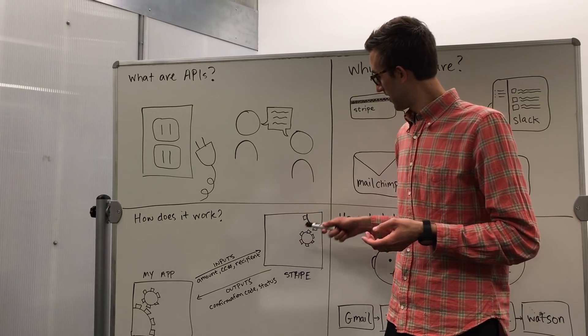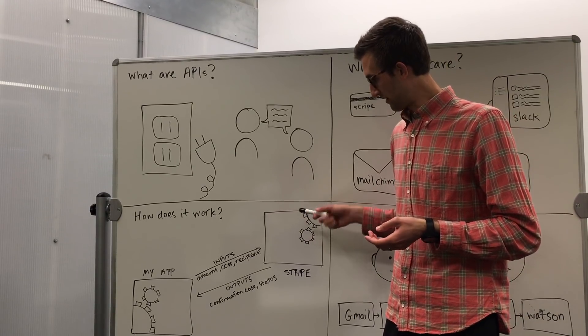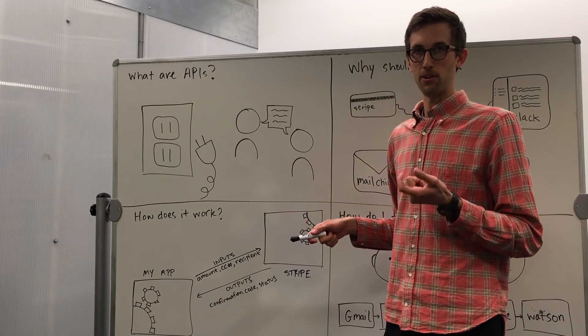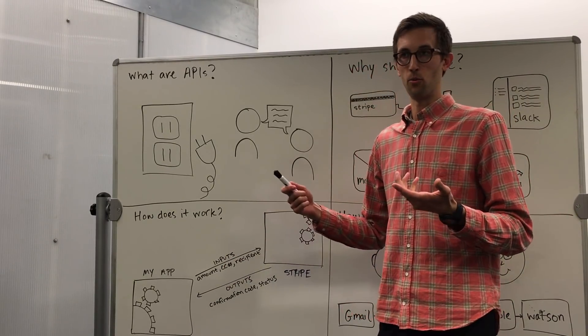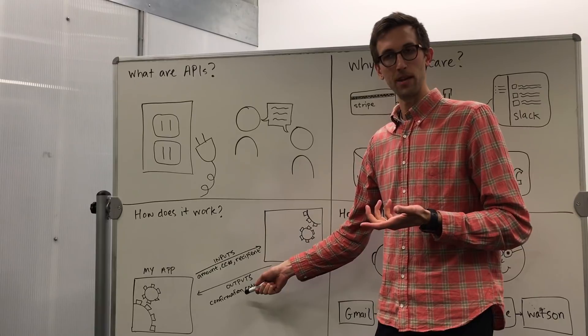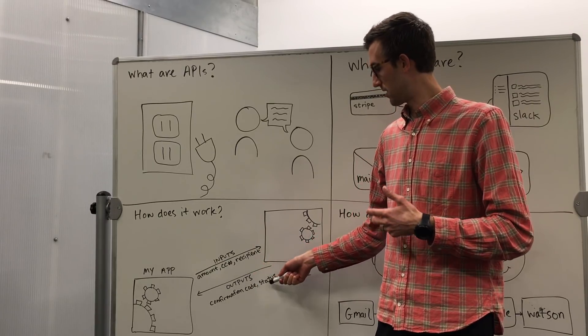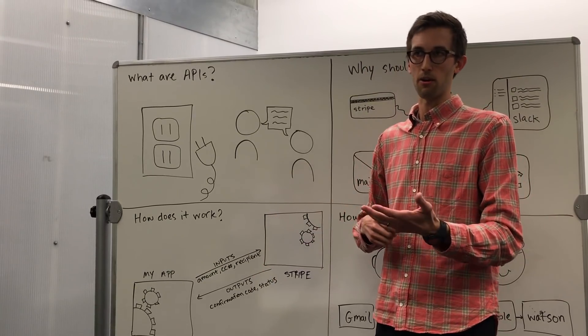And Stripe would say, thank you very much, you know what to do with this, and here's their turn. And then they would process the payment using the credit card. And they would send you a couple outputs just so that you knew what happened. So they would send you a confirmation code of this transaction, and a status. Did it go through, did the card balance, etc.